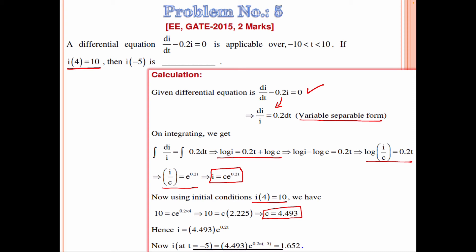Substituting c back, i = 4.493 e^(0.2t). At t = −5, i = 4.493 e^(0.2×(−5)) = 4.493 e^(−1) ≈ 1.652. So the answer to this problem is 1.652.